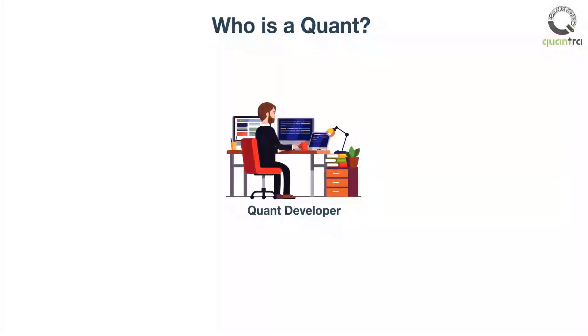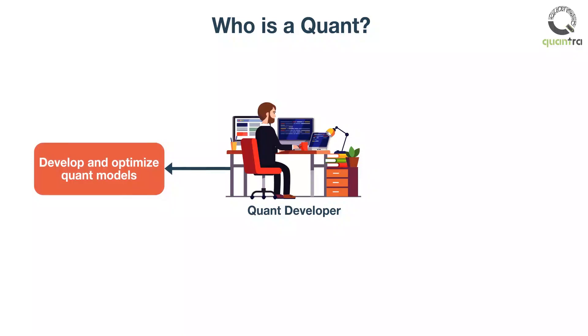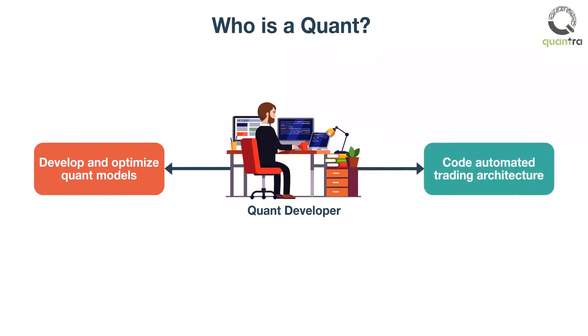Quant developers are of two types. The first type works closely with quant analysts and researchers to implement and optimize their models. The second type deals with financial pricing data and trading systems architecture, coding up the raw infrastructure that allows traders to run their models on.